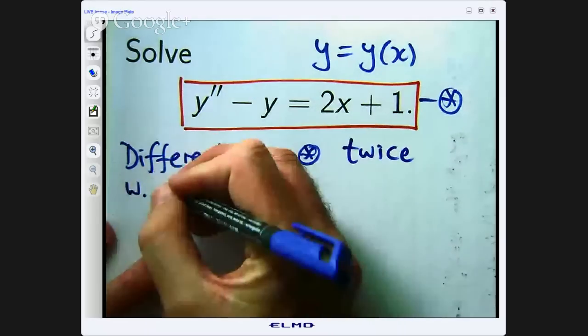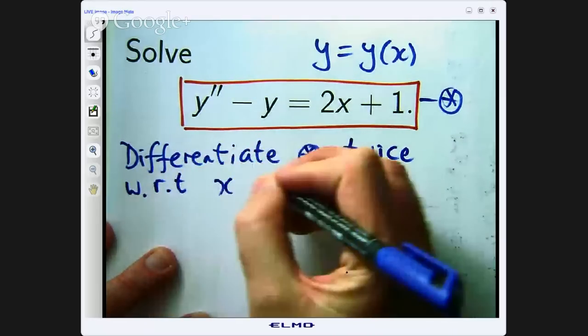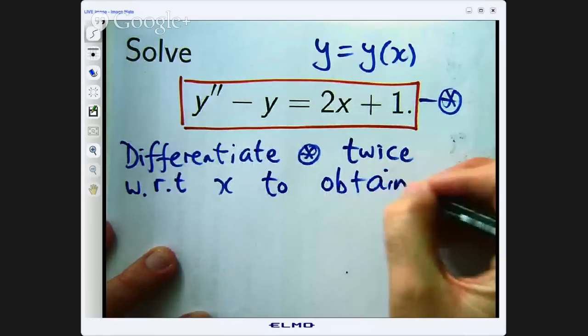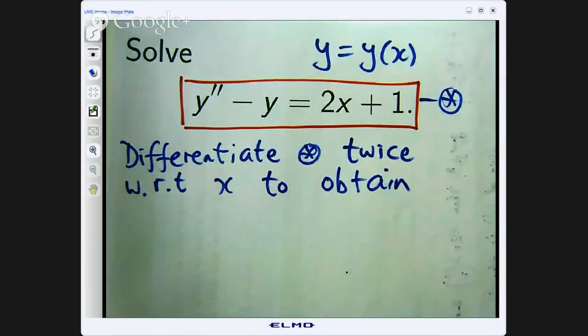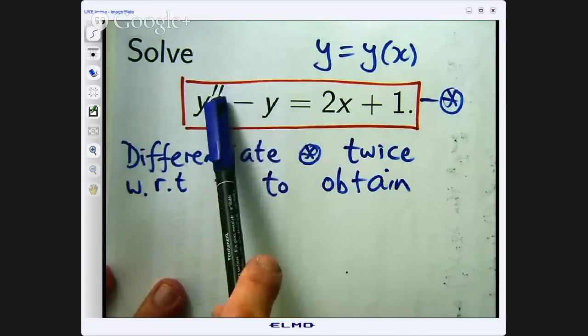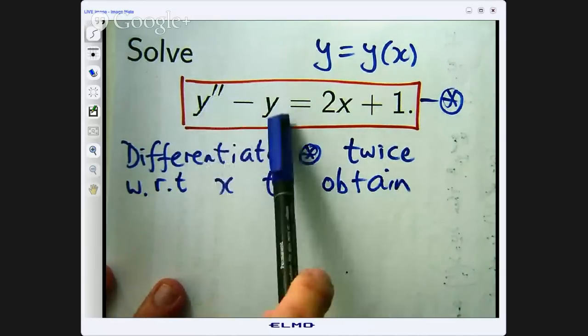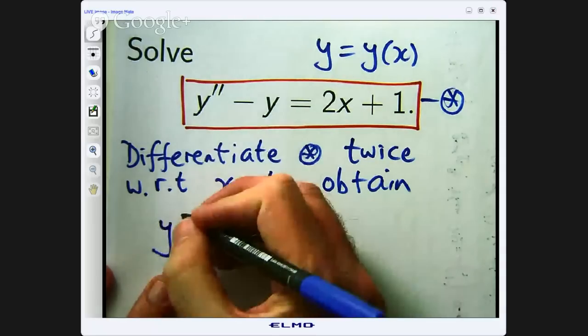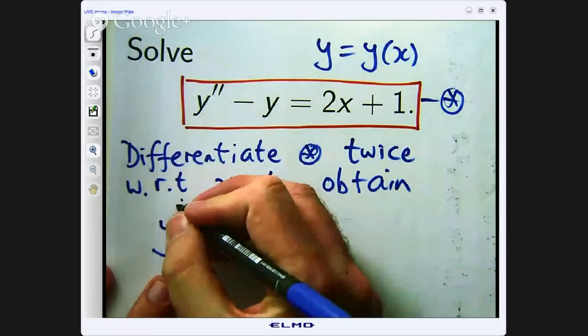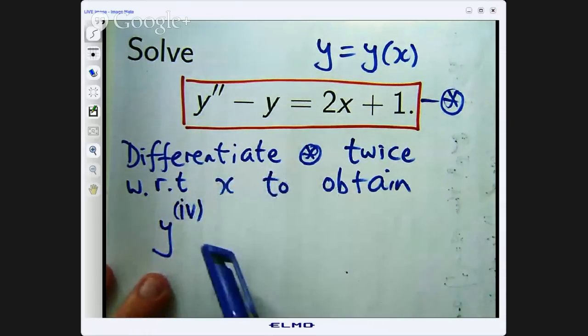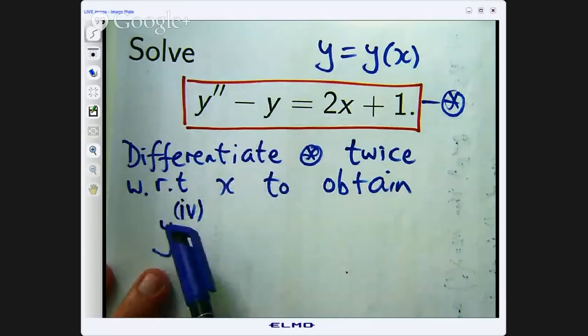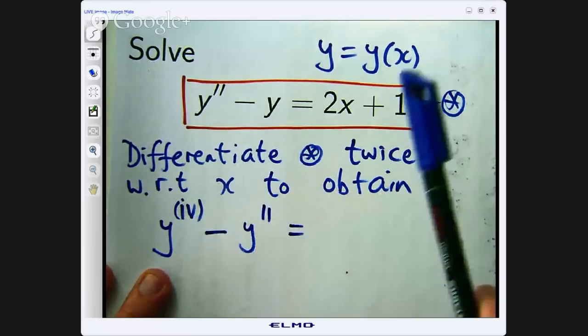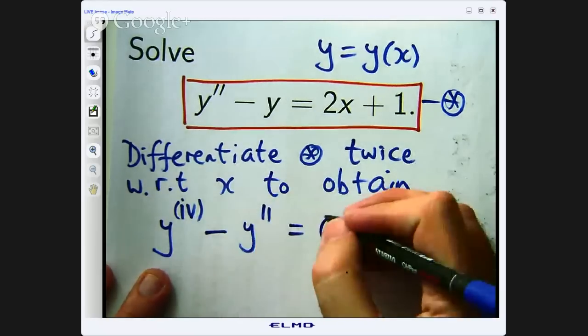So let us start. We are going to differentiate both sides star twice with respect to x to obtain the following. So on the left hand side I am going to differentiate this twice, so that will become the fourth derivative, and this will become the second derivative.